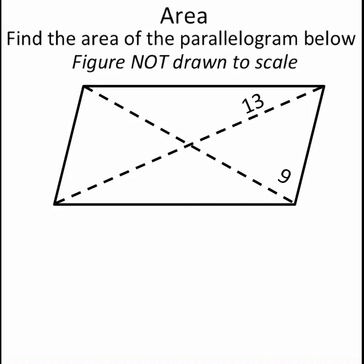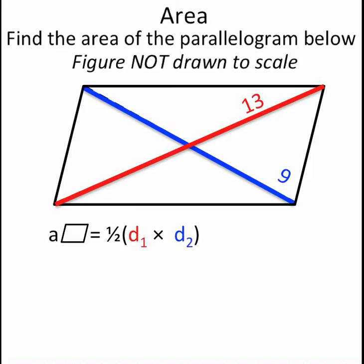The second formula for the area of a parallelogram is one-half times the product of its diagonals, or one-half times diagonal 1 times diagonal 2. In this problem, we're given values for both diagonal 1 and diagonal 2.